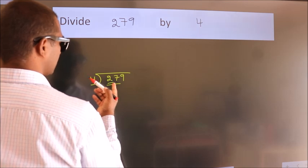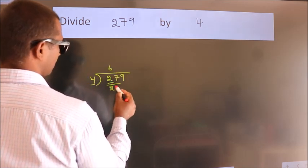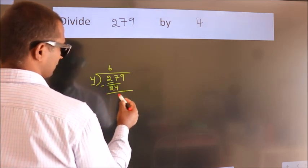A number close to 27 in the 4 table is 4 times 6, which is 24. Now we should subtract. We get 3.